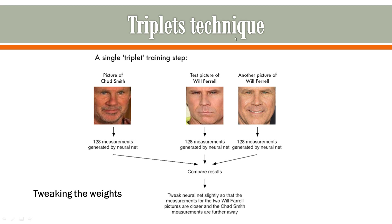For this, we apply the triplet technique. In the triplet technique, we supply three images to our network: one image of a different person, and two images of the same person but with slight variation. These three images are supplied to our network for training. Let's say one image is of Chad Smith — when we pass it to our neural network we get 128 numerical values, which is the measurement generated by our neural network. Likewise, for two images of Will Ferrell, we also get the same 128 numerical measurement values.